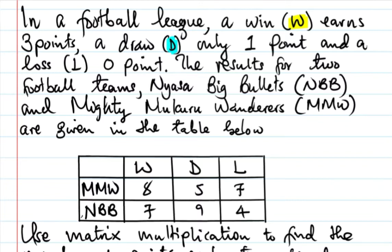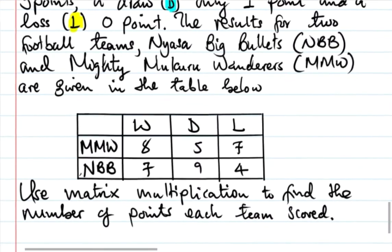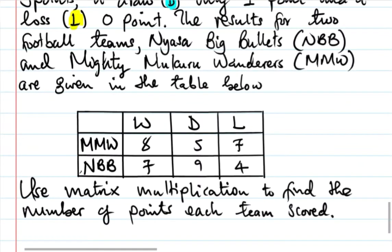The results for two football teams, Nyasa Big Bullets (NBB) and Mighty Moku Wanderers (MMW), are given in the table below. Mighty Moku Wanderers had 8 wins, 5 draws, and 7 losses.